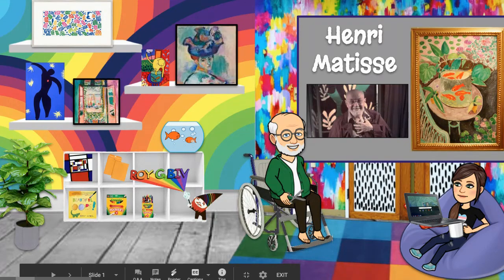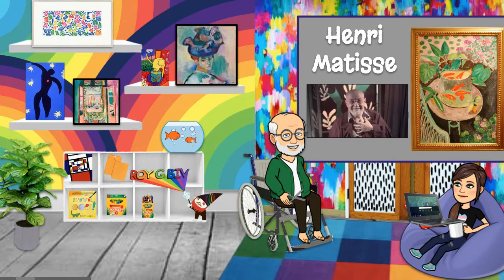The artist we're going to learn about today is Henri Matisse. He was a French artist who lived from 1869 to 1954, and it was in the early 20th century that Matisse was among one of the first artists to paint in a new style called Fauvism.